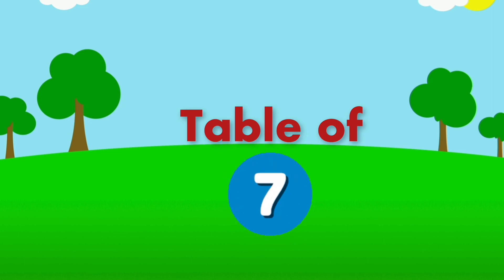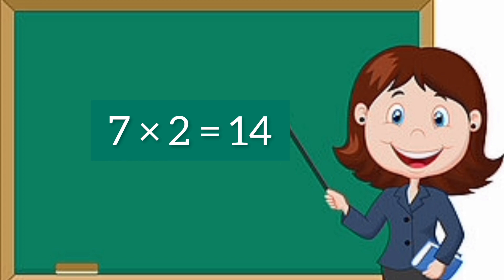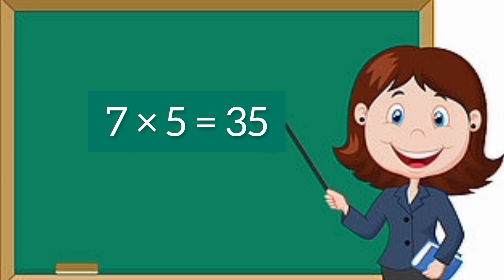Table of 7. 7 1's are 7. 7 2's are 14. 7 3's are 21. 7 4's are 28. 7 5's are 35. 7 6's are 42.